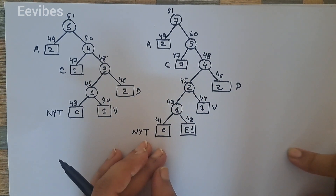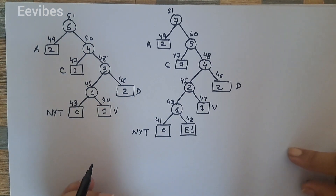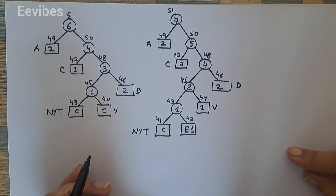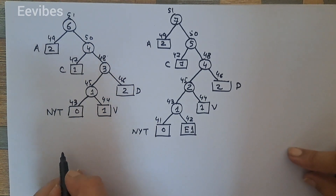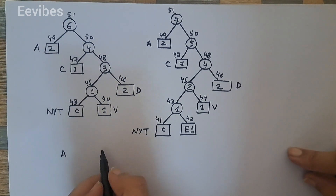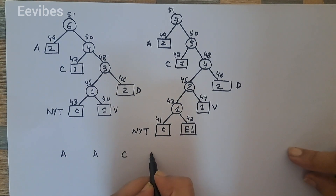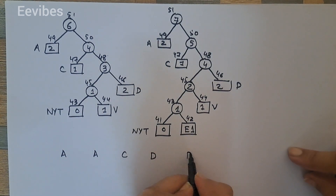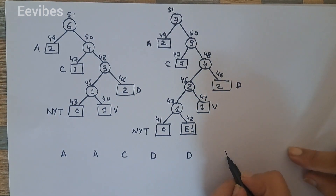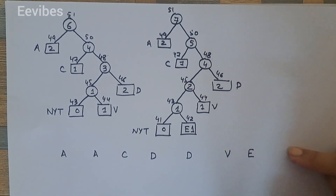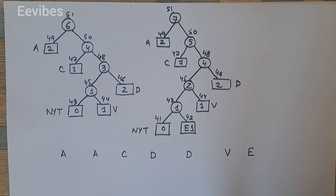In this way we construct the binary tree according to the adaptive Huffman coding scheme. In the next step we assign codes to the symbols — a, a, c, d, d, v, and e — which is explained in the next video. Thank you for watching.